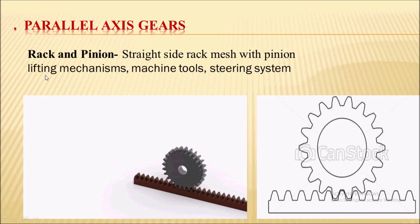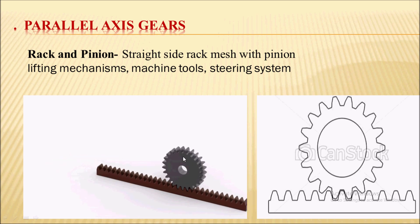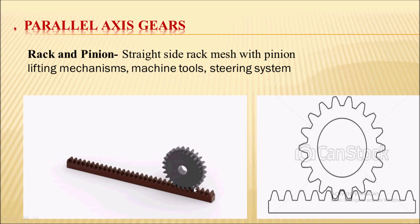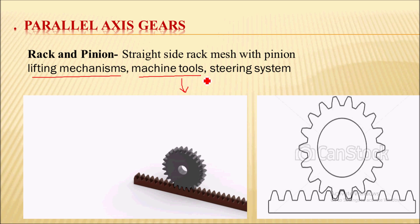The next parallel axis gear is the rack and pinion. A straight-line gear is called a rack and a cylindrical gear is called a pinion. The straight rack meshes with the pinion, converting the linear motion of the rack into rotary motion of the pinion, or vice versa. Applications of rack and pinion include lifting mechanisms, machine tools such as lathe, drilling, and milling machines, and automobile steering systems.